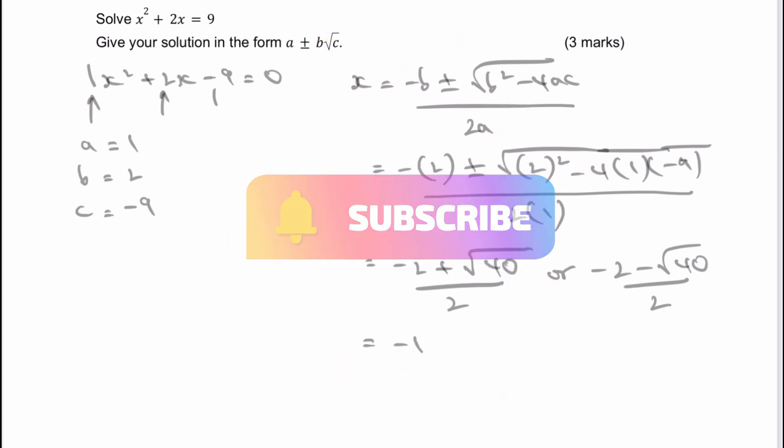And what you would get is -1 + √10, which is -1 + 1√10, or -1 - √10, which is actually the answer to this question.